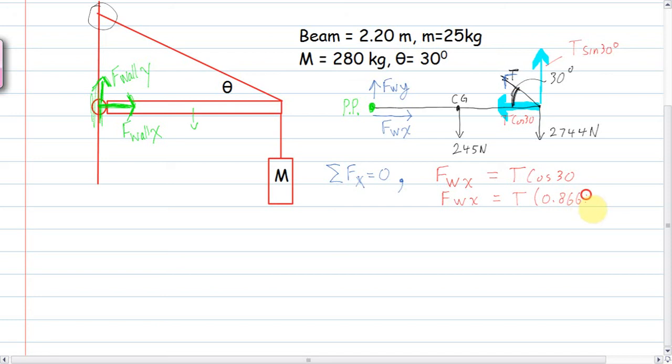Now I'm going to do the sum of the forces in the y. So sum of the forces in the y equals zero. That'll give me, let's do it. The upward forces, T sine theta, T sine 30, and f of the wall. So f of the wall in the y direction plus T sine 30. Those are the up ones. And the down ones have to balance. That's 245 newtons. And that is basically the force of gravity of the beam plus 2744 newtons. And that's the force of gravity of the mass at the end.